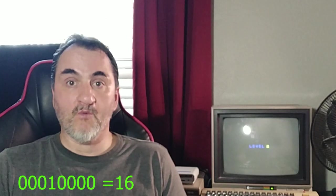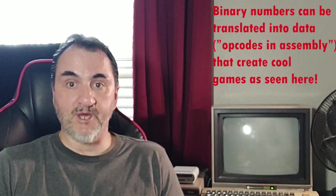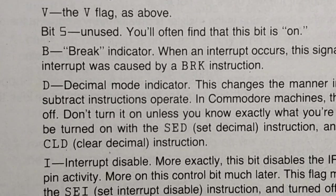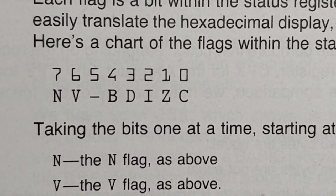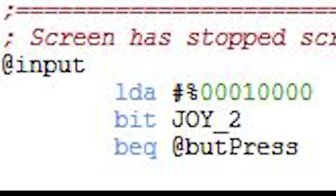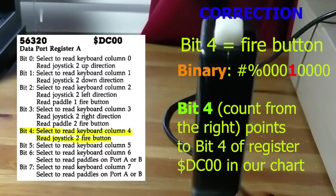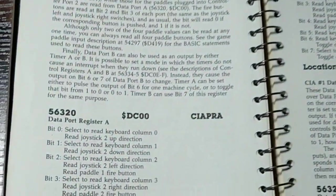Computers really only understand one thing: binary numbers. Binary numbers can be tested by the accumulator, which is a particular register your Commodore 64 computer uses for arithmetic and logical operations. For example, the binary number 00010000 is actually the number 16, but when testing bits it's important to see them in the original binary state. Each bit counts from 7 to 0 starting at the left. Therefore we need to see which bit is active and being used by that memory address. The JOY2 register DC00, or 56320 in decimal, is used to read the joystick port's fire button since it's bit 7.